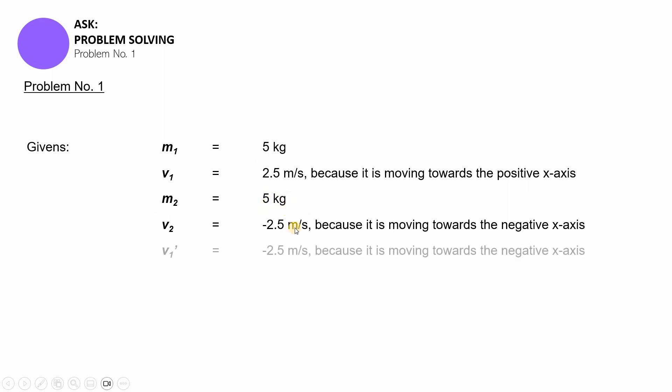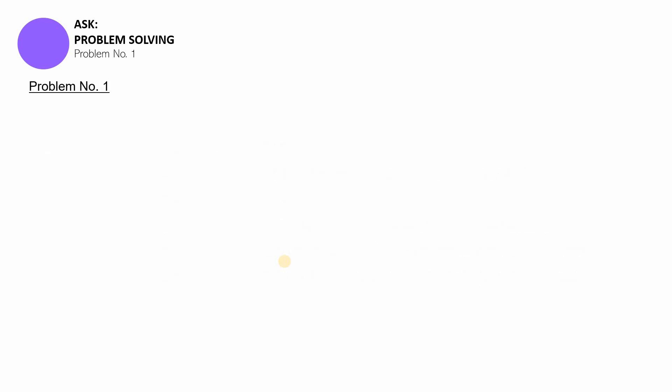Now, after the collision, pareho lang yung masses. So, there's no need to put m1 prime. But, yung v1 nagbago. So, from kanina, na positive siya, naging negative na siya. And you know why, because it's now moving towards the negative x-axis. You know, v2, kanina na negative, is now positive because it's now moving towards the positive x-axis. Bakit siya nabuo ng ganun ngayon? Kasi nga, nagbanggaan po yung dalawang bola na yan.